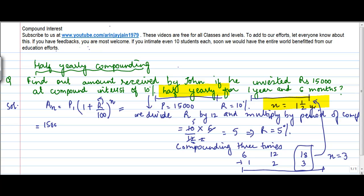Now I need to put up the values here. So 15,000 into 1 plus r, r is 5 upon 100 to the power 3. Simply speaking, you divide the rate by the period and n gets multiplied according to this compounding.